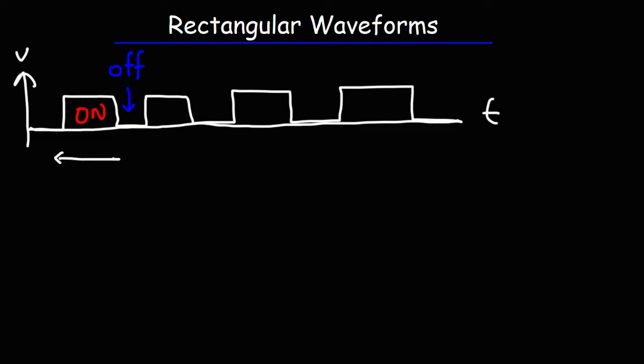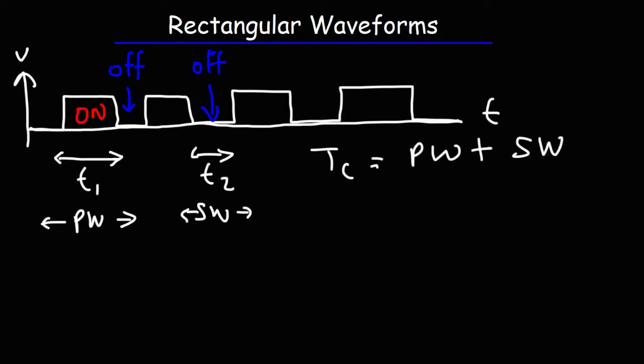Now the time period for which the circuit is in the on state or when the voltage is high we're going to call that T1 and that represents the pulse width of the rectangular wave. T2 would be the time when the circuit is in the off state or when the voltage is low. This is known as SW which stands for space width. The cycle time is the sum of T1 and T2. It's the pulse width plus the space width.